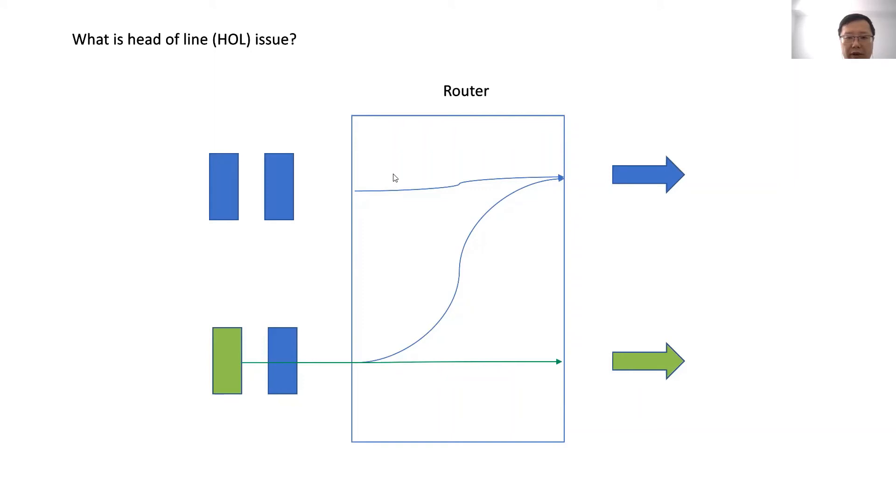The router can only handle one package at a time. So when it's handling this package, the other packages have to wait. That blocks the green one, even though the target port is idle.